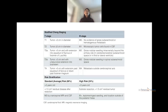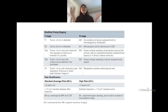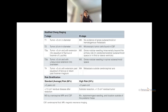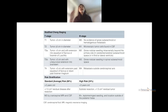T staging: T1 is a tumor less than 3 cm in diameter; T2 is ≥3 cm; T3a is more than 3 cm extending into the aqueduct of Sylvius or foramen of Luschka; T3b is more than 3 cm with unequivocal extension into the brainstem; T4 is more than 3 cm extending past the aqueduct of Sylvius down through the foramen magnum. M staging: M0 — no metastasis; M1 — microscopic tumor cells in the CSF; M2 — gross nodular seeding intracranially beyond the primary site; M3 — seeding in the spinal subarachnoid space; M4 — metastasis outside the craniospinal axis.